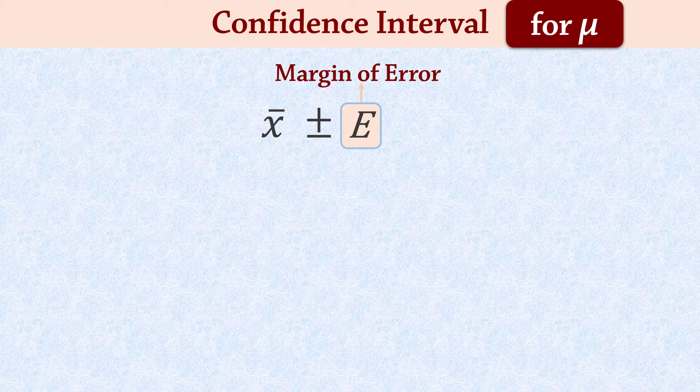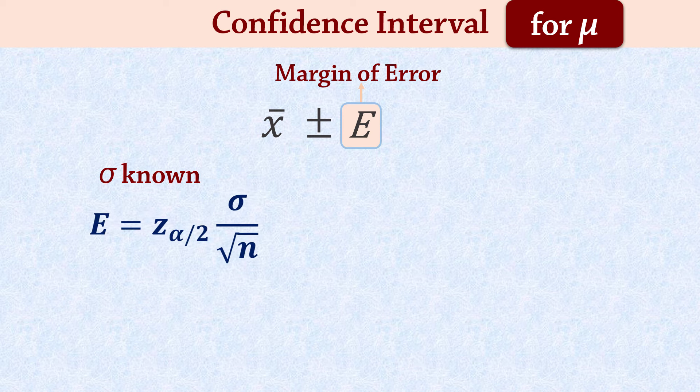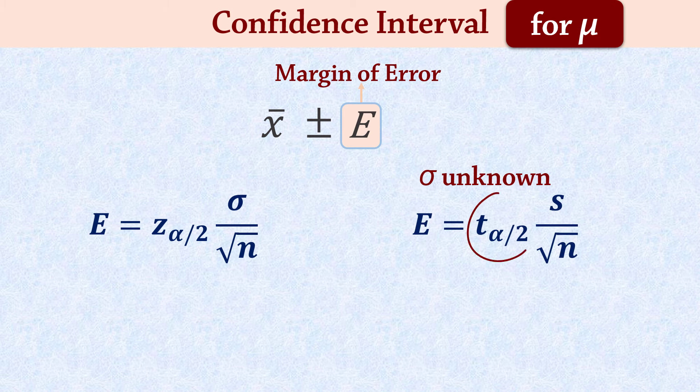As seen in an earlier video, if we assume the population standard deviation is known, the margin of error is determined by this formula with a Z critical value. Since the population standard deviation is usually unknown in practice, it is substituted with the sample standard deviation which requires we use the T distribution.